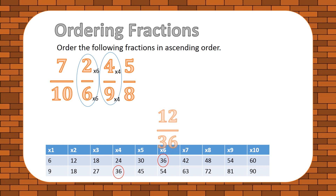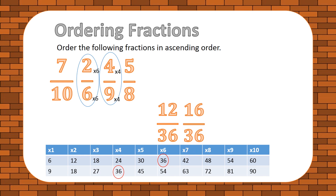After applying the multiplications, 12 out of 36 is smaller than 16 out of 36. Therefore, 2 out of 6 is the smallest and 4 out of 9 is the second smallest.